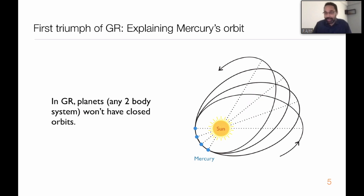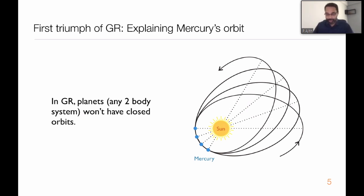Almost all planets in the solar system orbit the Sun in elliptical orbits. But interestingly, Mercury does not follow a closed elliptical orbit - Mercury's orbital ellipse precesses, as shown in the cartoon. Astronomers over a few hundred years have acquired enough accurate observational data to make precise measurements of this orbital precession. Most of this orbital precession is caused by the fact that this is not a purely two-body system - other massive planets like Jupiter and Saturn add perturbations.